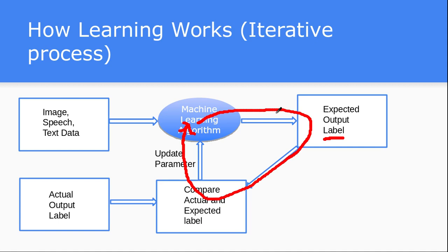You keep iterating this process — generally people do it a hundred, five hundred, or even a thousand times — until you get a sufficient amount of accuracy. This is how the training system works, and this whole process happens in offline mode. Once you complete it, you have a model that is the representation of the data.